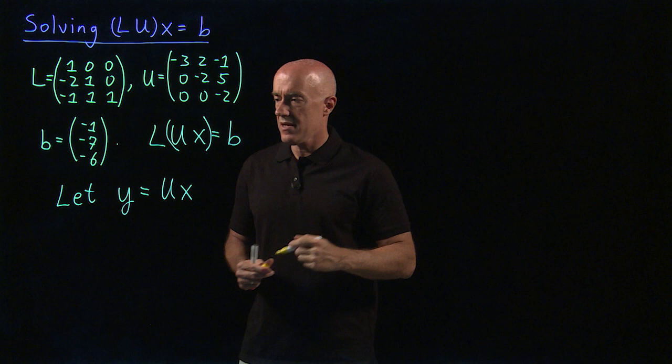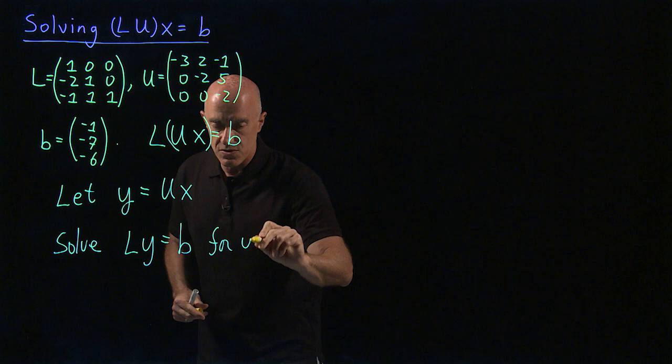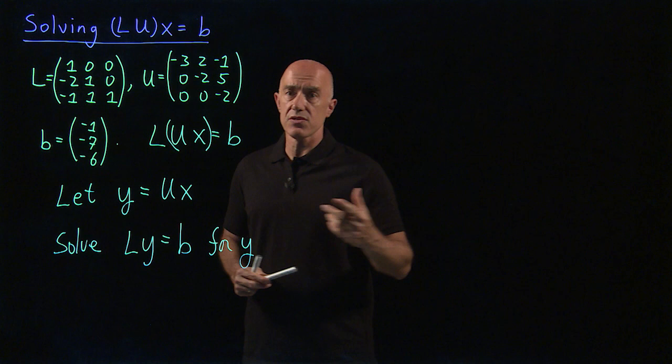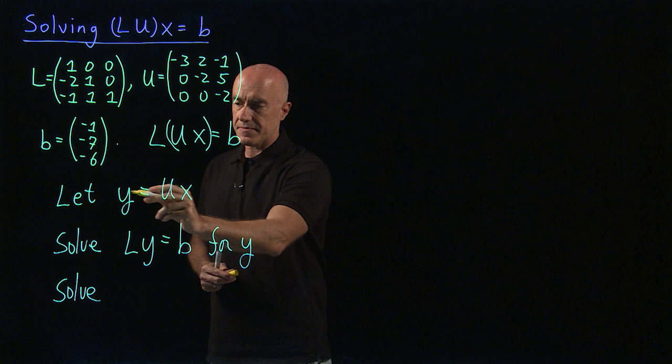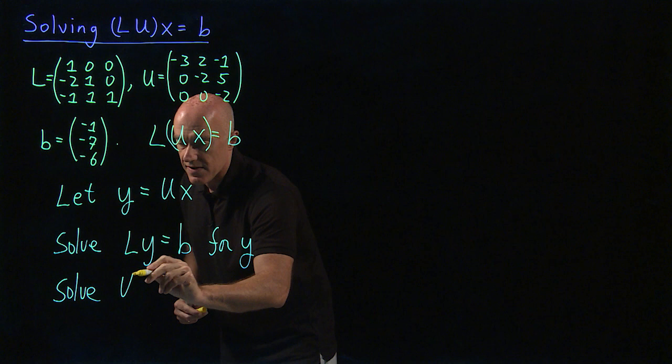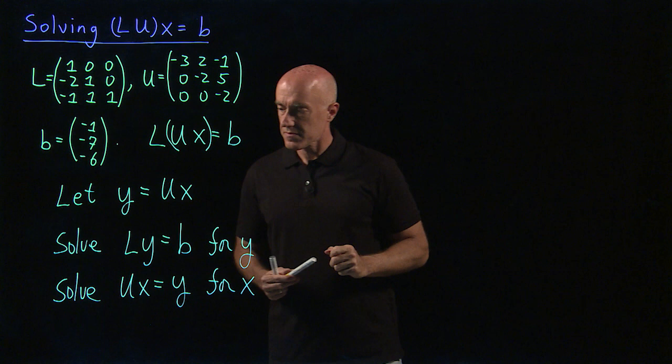So what happens if we let this UX be Y? Then we need to solve L times Y equals B for Y, for this new column vector Y. So the L is known, B is known, so we can solve that for Y. Once we solve this for Y, then we proceed to solve Y is U times X. We know Y now, so we solve U times X equals Y for X. And that's what we want to find. We want to solve for X.